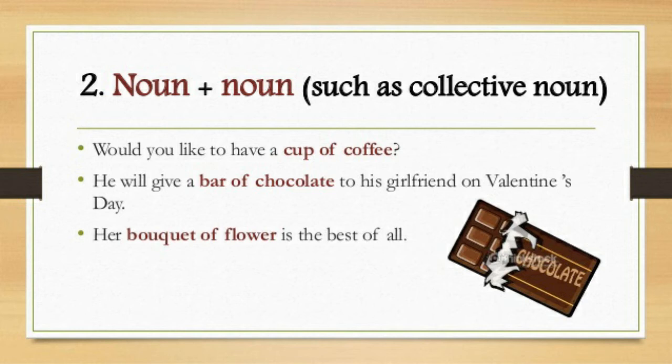Let's see some examples. 'Would you like to have a cup of tea?' — 'cup' is a noun and 'tea' is again a noun. The next one: 'He will give a bar of chocolate to his girlfriend on Valentine's Day.' — 'bar' and 'chocolate' are both nouns, forming a noun plus noun collocation.